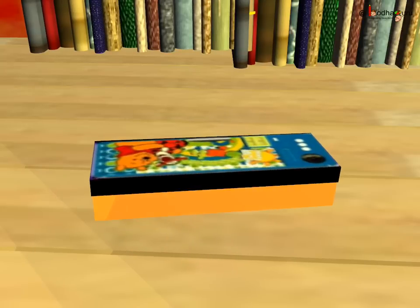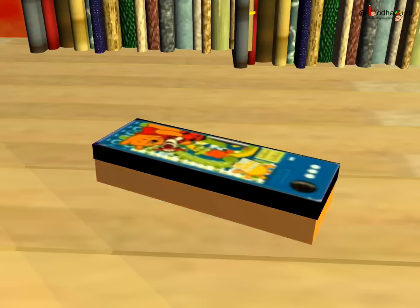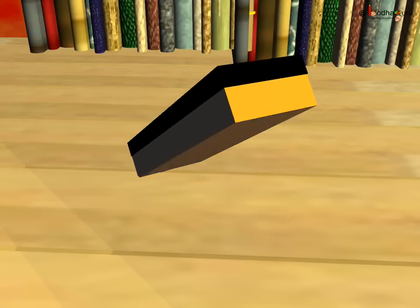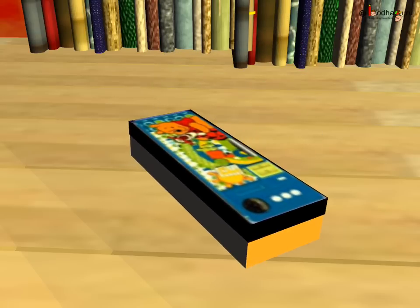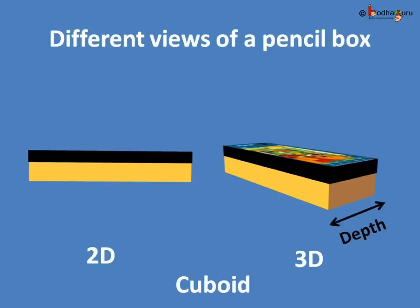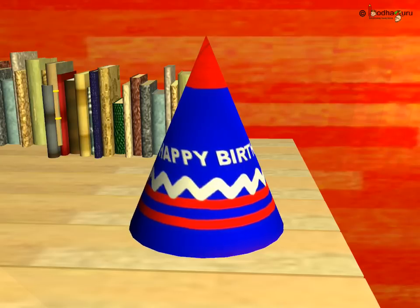See, this is a pencil box. It looks like a rectangle, but it has depth too. It is called a cuboid shape. So you can say a pencil box has the shape of a cuboid. Here is a birthday hat.